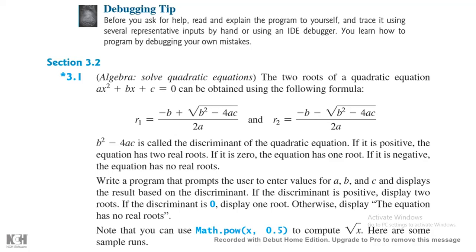b squared minus 4ac is called the discriminant of the quadratic equation. If it is positive, the equation has two real roots. If it is zero, the equation has one root. If it is negative, the equation has no roots. We have to write a program that prompts the user to enter values for a, b, and c, and displays results based on the discriminant.